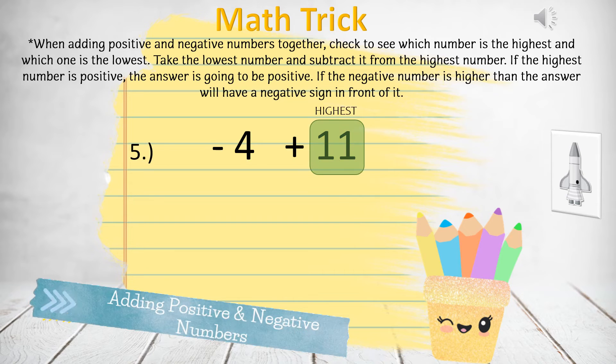Negative 4 plus 11. The highest number is 11, the lowest number is 4. 11 minus 4 equals 7. Since the highest number is positive, the answer is positive 7.